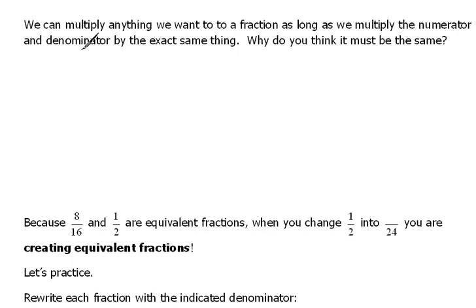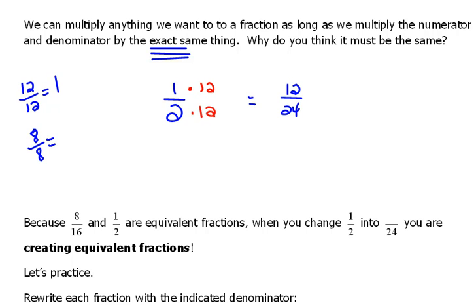Now, why do you think it has to be exact? Going back to that one half, when we multiply top and bottom by 12, to change that into 12 over 24, think about what 12 over 12 is. What is 12 divided by 12? Well, that's a 1. Earlier, we multiplied by 8 on top and 8 on bottom. What is 8 divided by 8? 1.